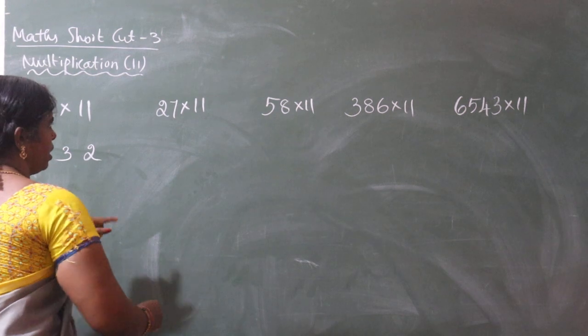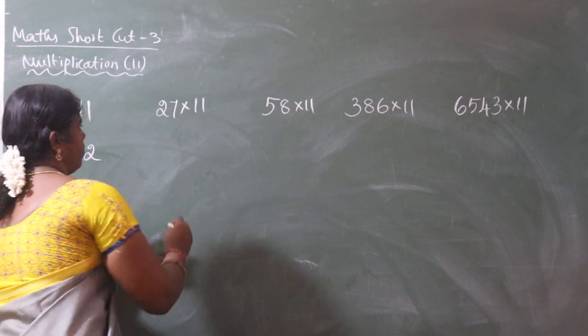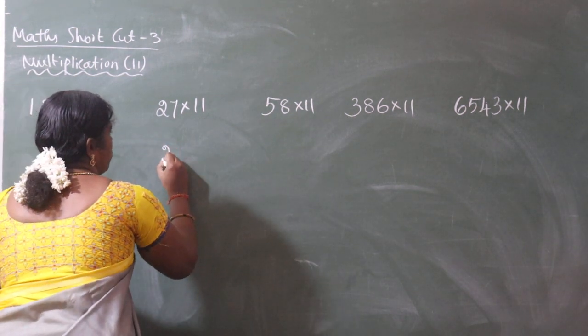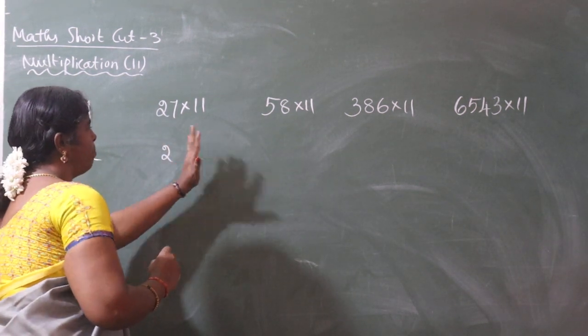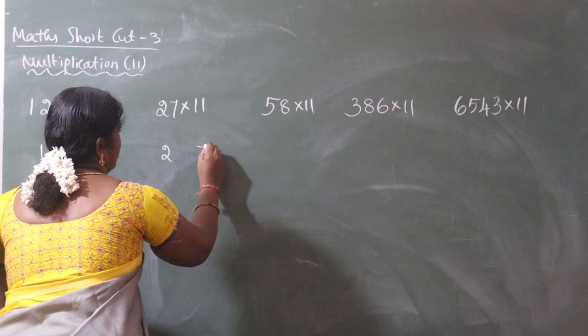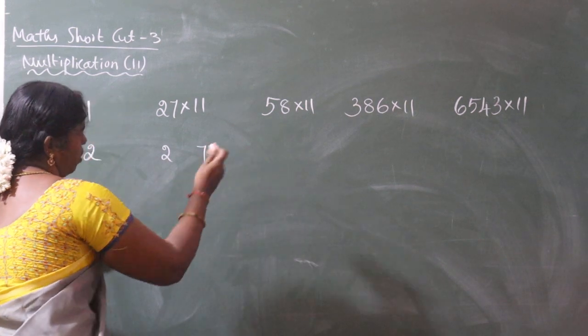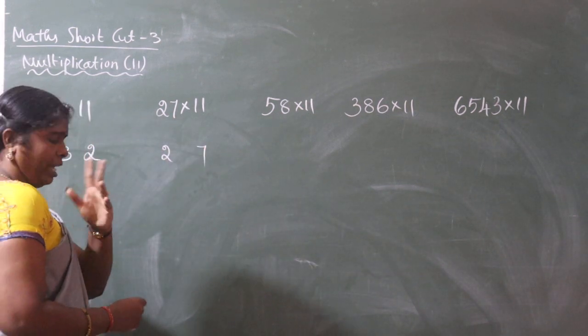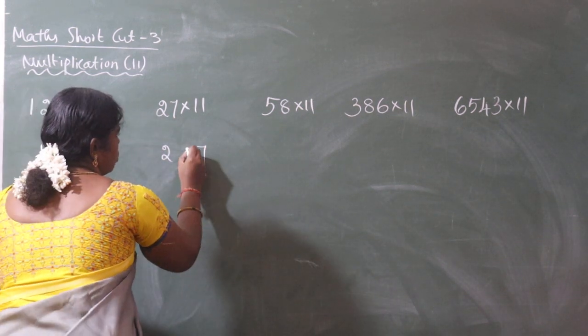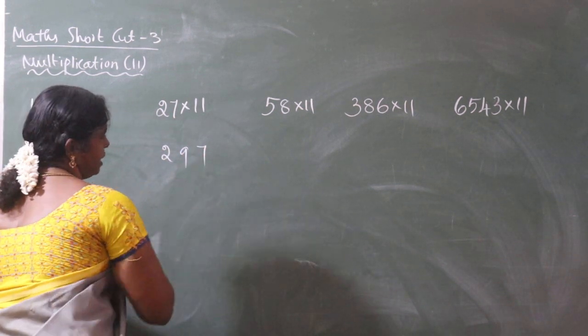Let's take the next step: 27 into 11. We write 2, leave a little gap, write 7 in the middle. 2 plus 7 is 9. That is the answer: 297.